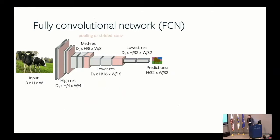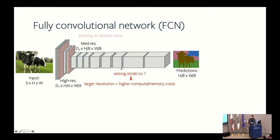This is an easy way to apply any classification network to produce dense predictions. For many tasks we really want a bigger prediction output. The network produces a small output because of pooling operations that decrease resolution. We can remove pooling or set stride equal to one — then we get predictions only 8 times smaller than the original image edge. This gives larger resolution but increases computational cost.